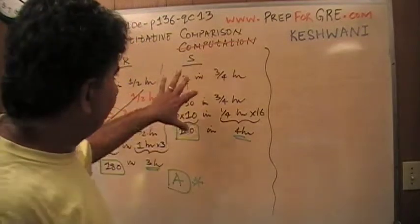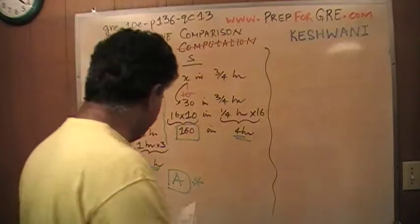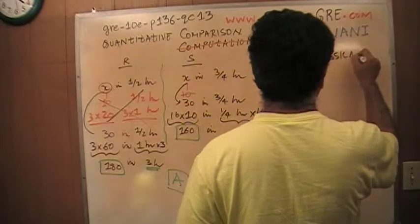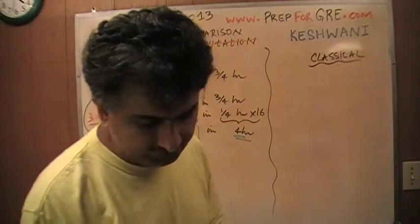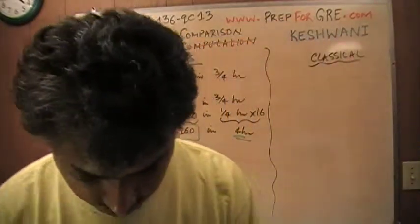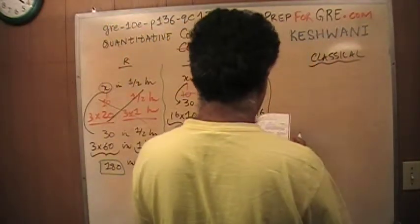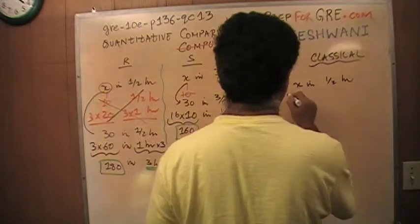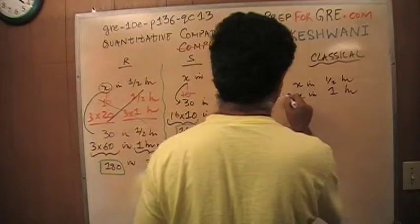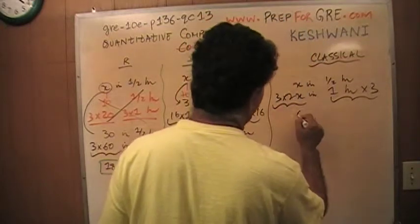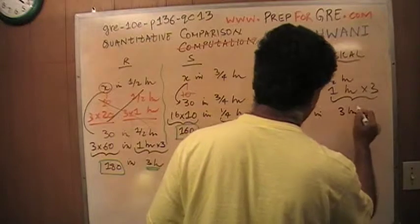Now let's do the conventional algebraic method. Machine R does X in half an hour, therefore 2X in one hour. Times three: machine R does 6X in three hours.